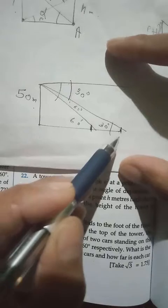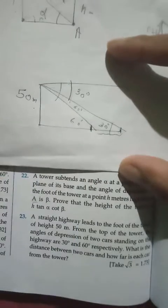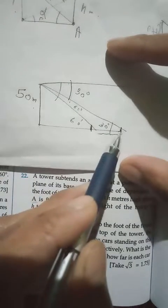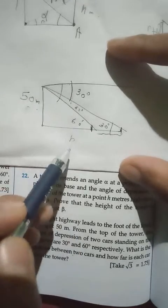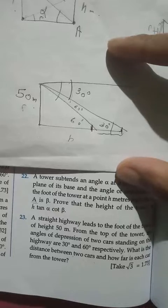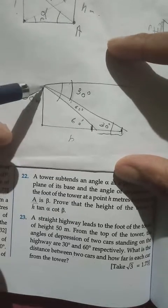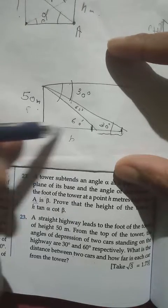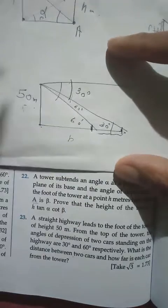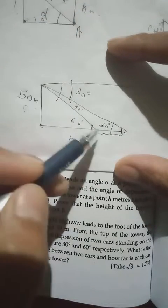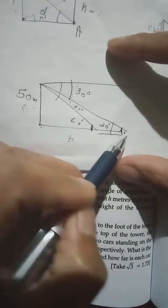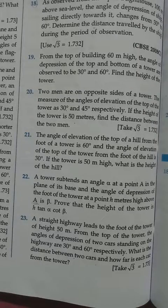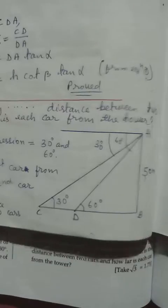We have to find the distance between the two cars, and also how far each car is from the tower. We know the perpendicular (tower height) and need to find the base distances, so we use tan. We have a tower and a straight road. From the top of the tower there are two cars: the first car makes an angle of depression of 30°, and the second car makes an angle of 60°.